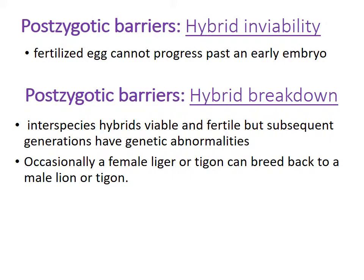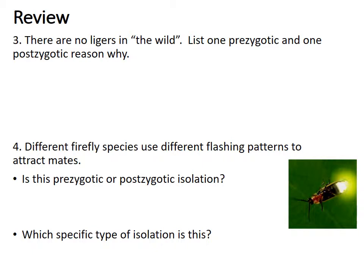There are no ligers in the wild — one prezygotic reason is habitat isolation since lions and tigers don't share ranges; one postzygotic reason is that ligers tend to be sterile, so hybrid sterility. For number four, different firefly species use different flashing patterns to attract mates — this is prezygotic because it happens before zygote formation, and the type of isolation is behavioral isolation.